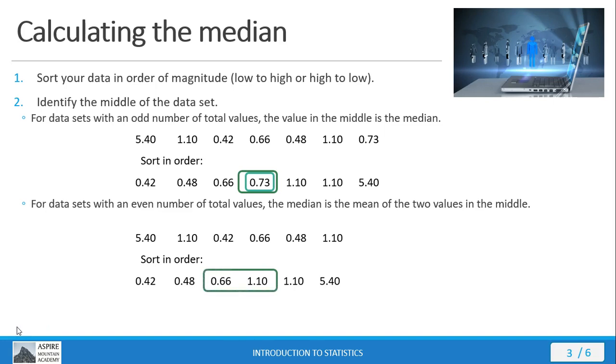If we choose just the 0.66 then we're going to have two values on the left and three values on the right. Likewise if we choose 1.10 then we're going to have three values on the left and two values on the right. That's why we average both of these values to get the median. So averaging 0.66 and 1.10 gives 0.88. So 0.88 is then the median of the data set even though 0.88 is not an actual value in the data set itself.